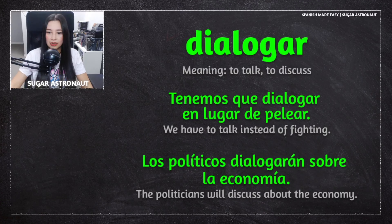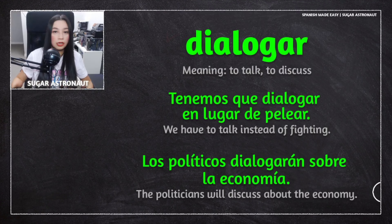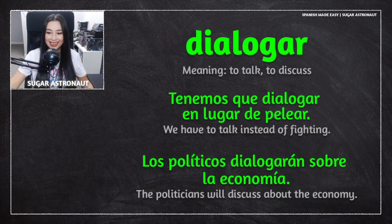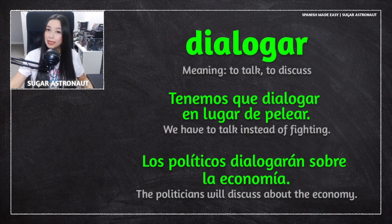You will hear this a lot, as I said, in formal situations — maybe someone from the news is saying this. Los políticos dialogarán sobre la economía — the politicians will discuss or will talk about the economy. Dialogar is a very common verb that means to talk, to discuss. This verb is an irregular verb, so it has some irregularities here and there.